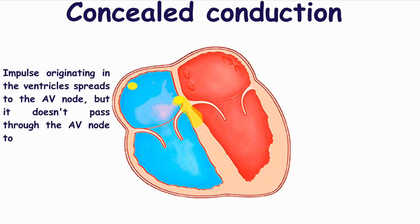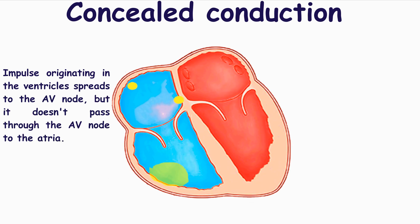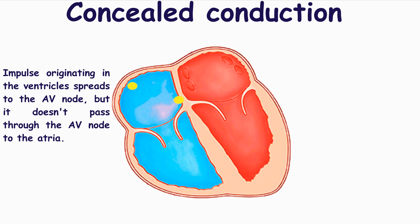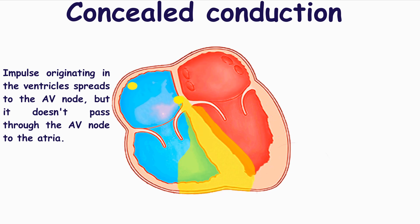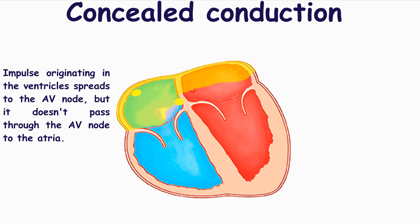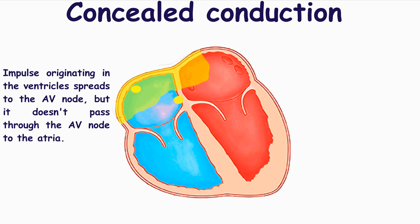It may depolarize the lower part of the atrioventricular node, but the impulse cannot be conducted to the atria. In spite of the impulse incompletely penetrating into a part of the atrioventricular node,